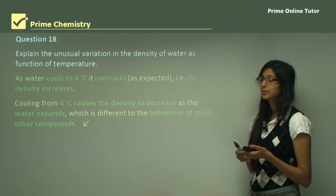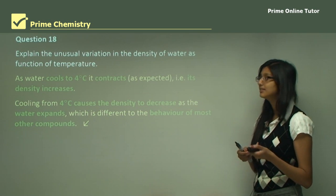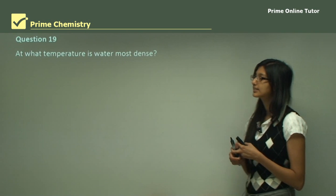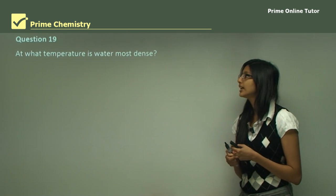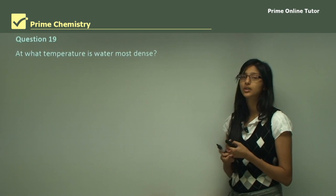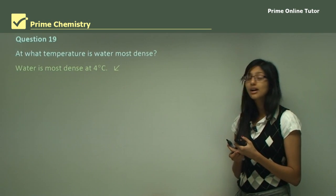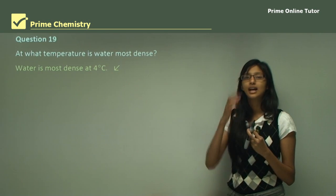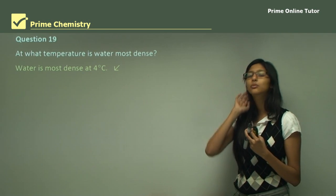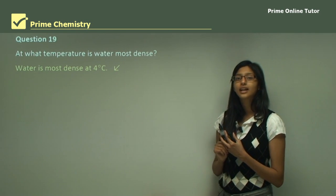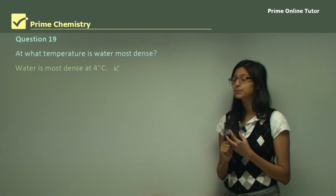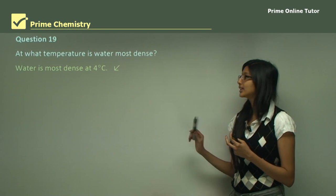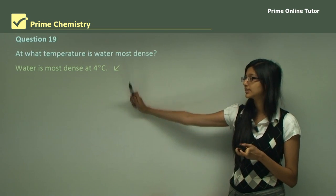Question 19: At what temperature is water most dense? Water is most dense at 4 degrees Celsius, and the density of water at 4 degrees Celsius is 1 gram per centimeter cubed. Therefore water is most dense at 4 degrees Celsius.